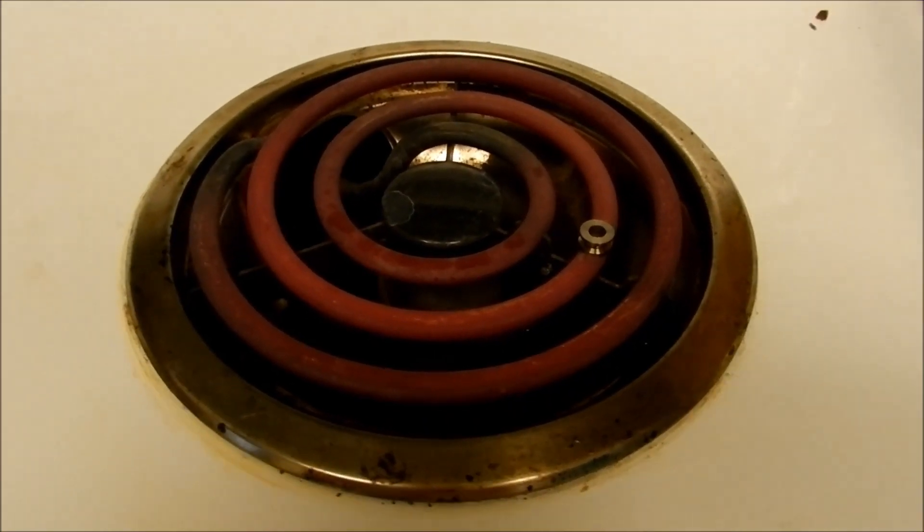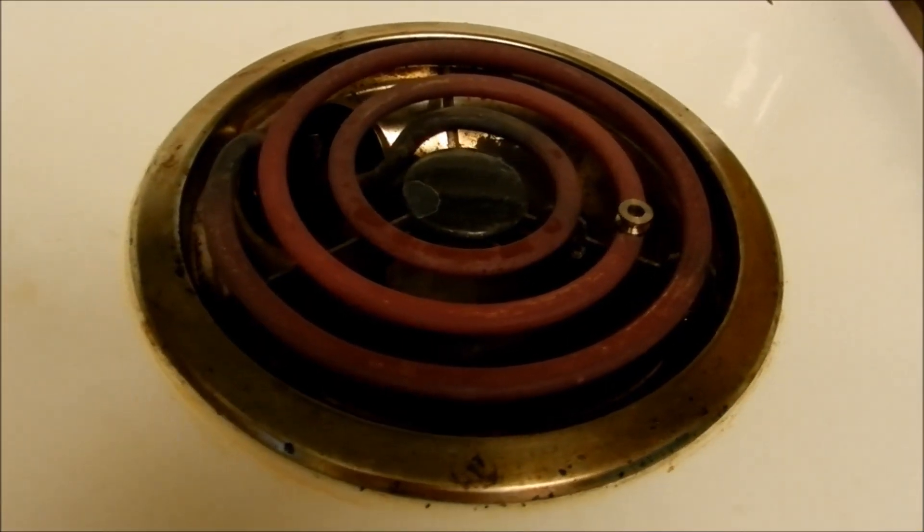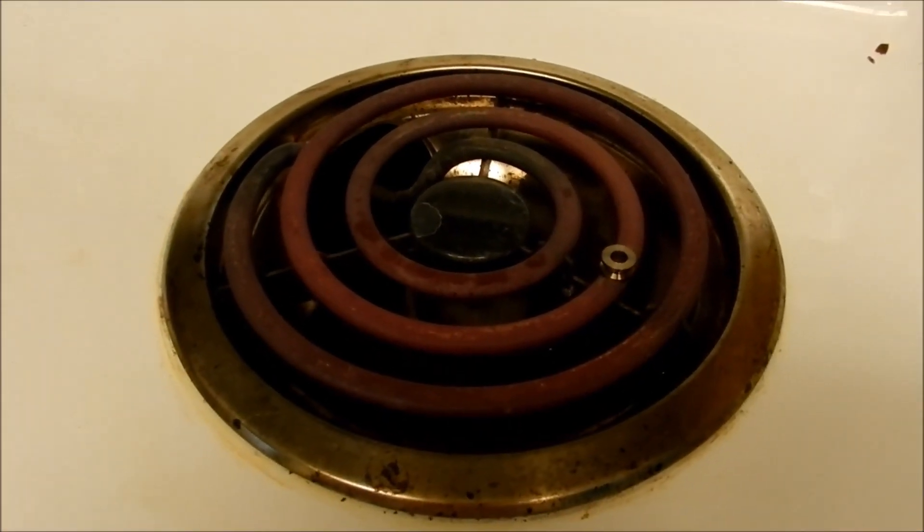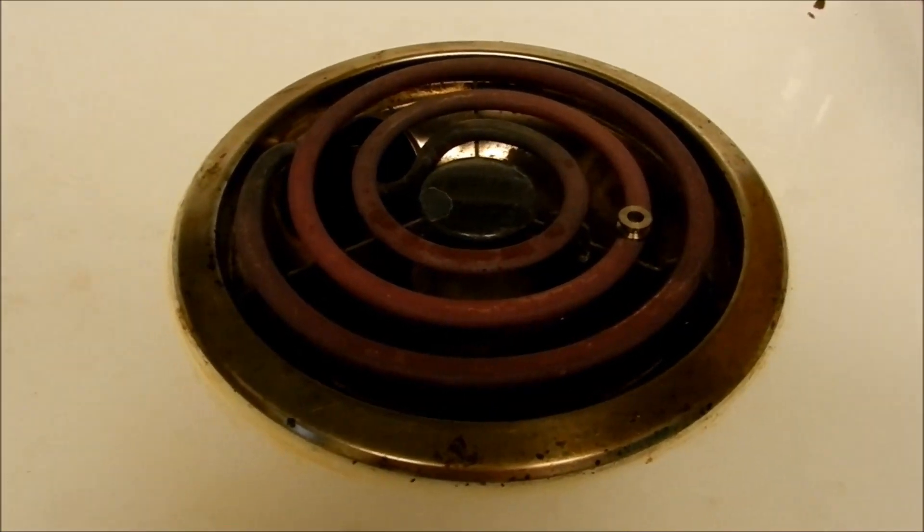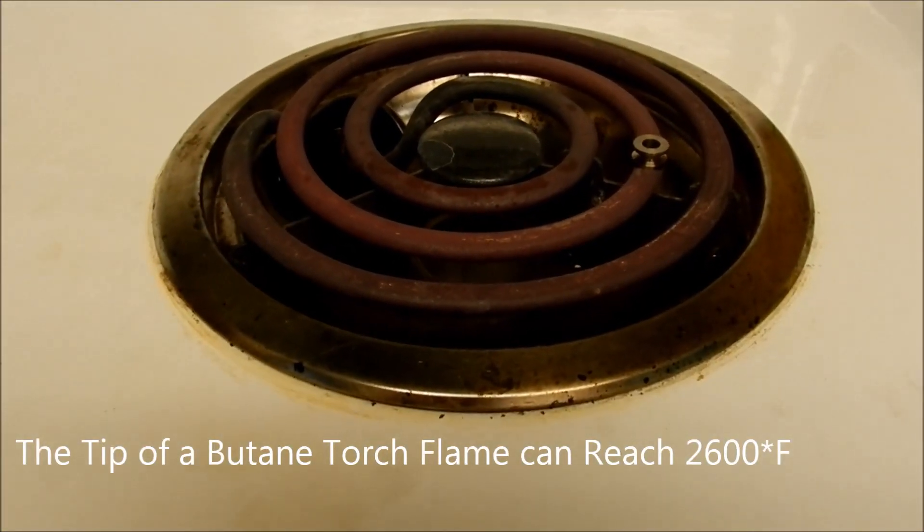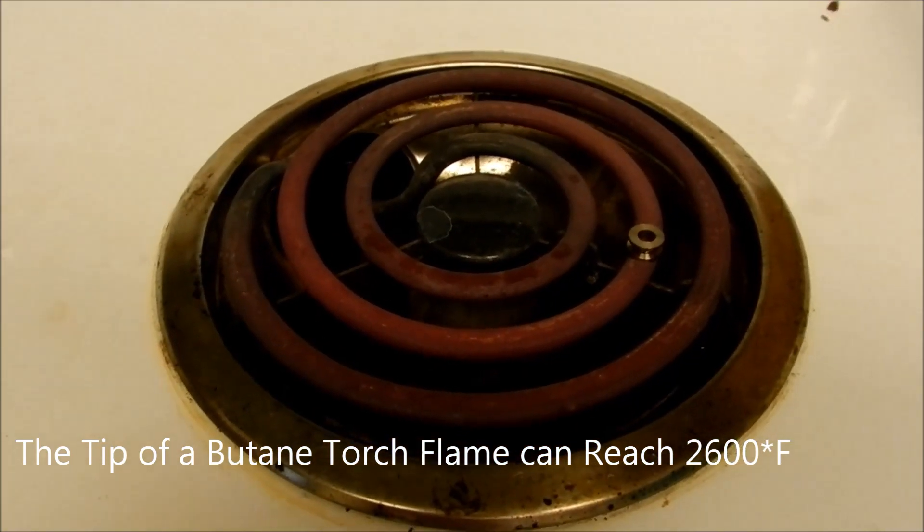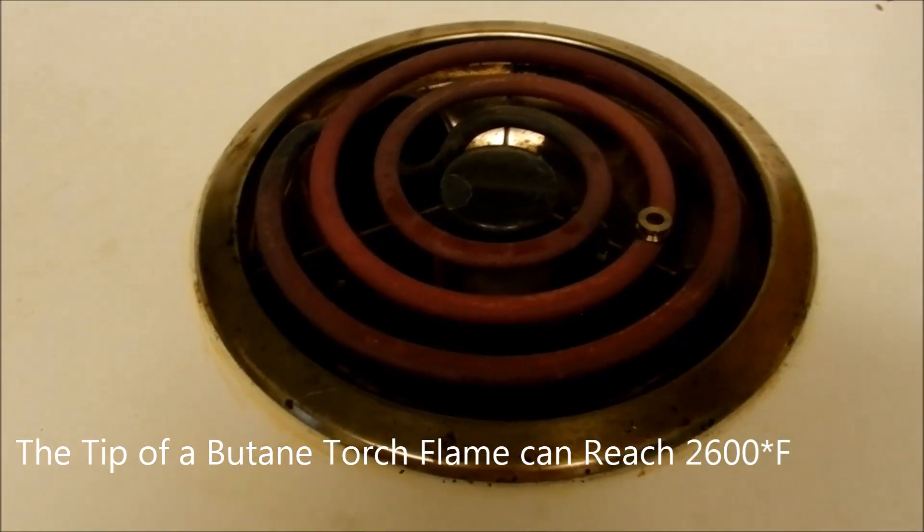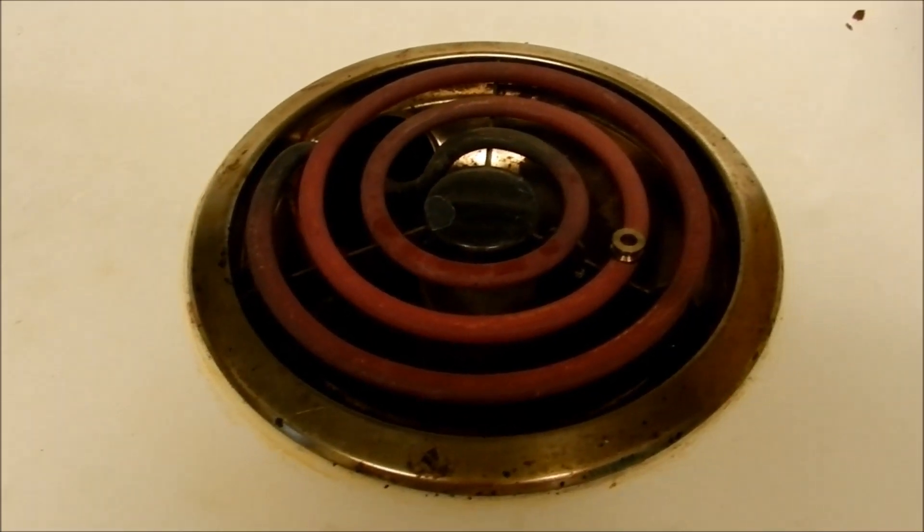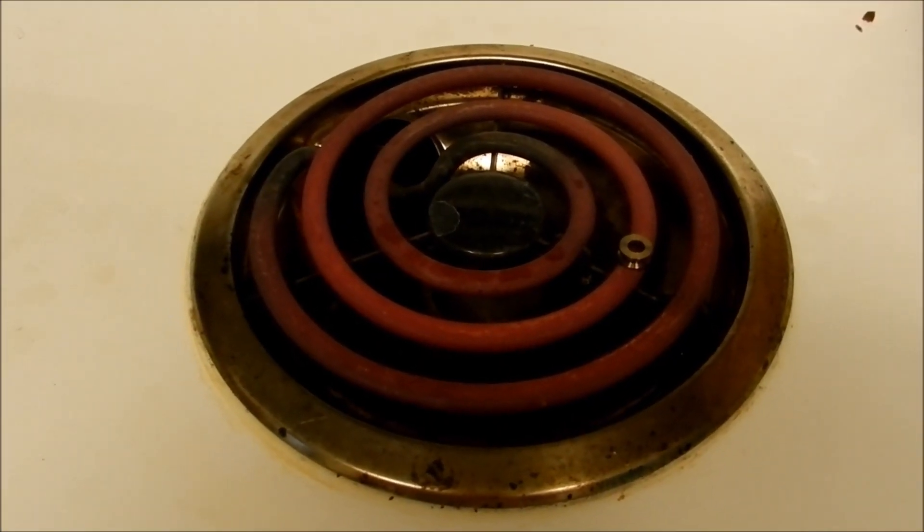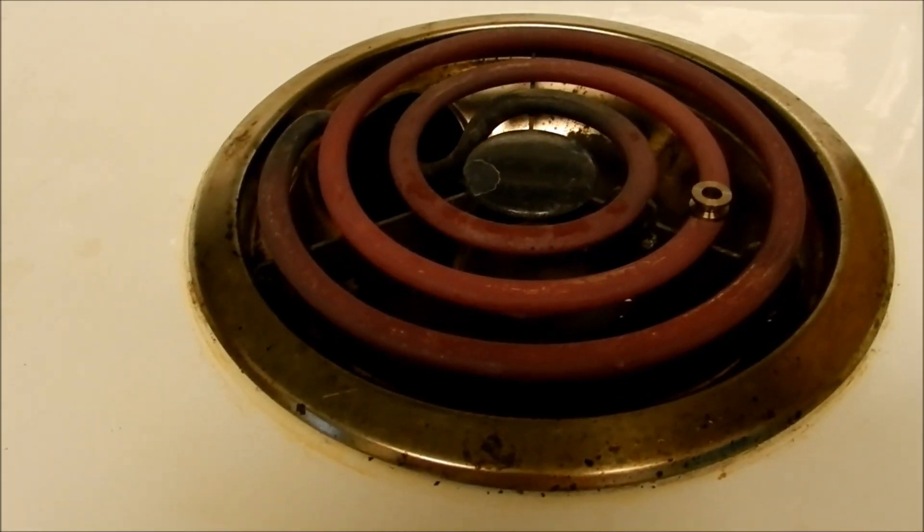It's a lot easier to overdo it with a torch than with a stove, because the actual heat from the torch is much hotter than the electric stove on a lower heat setting. Because you can actually control the heat, whereas with a torch you only control it by the amount of time that it's on there. And it's easy to get inconsistent colors or dark spots.